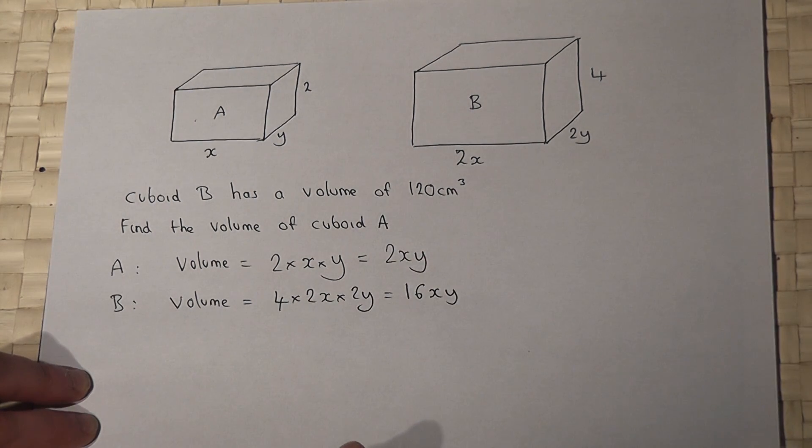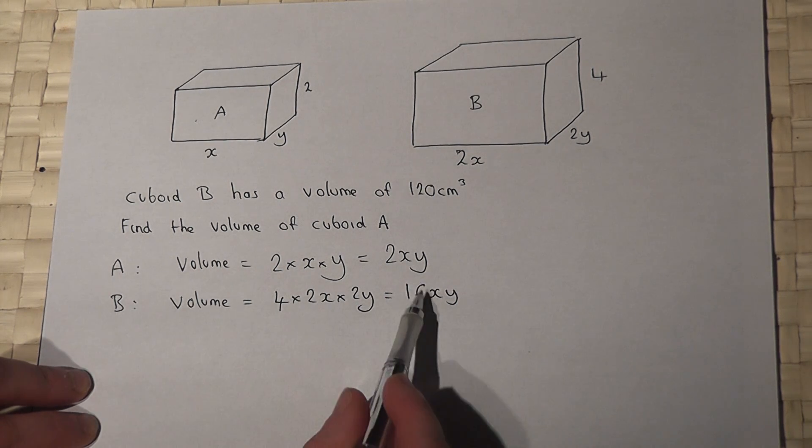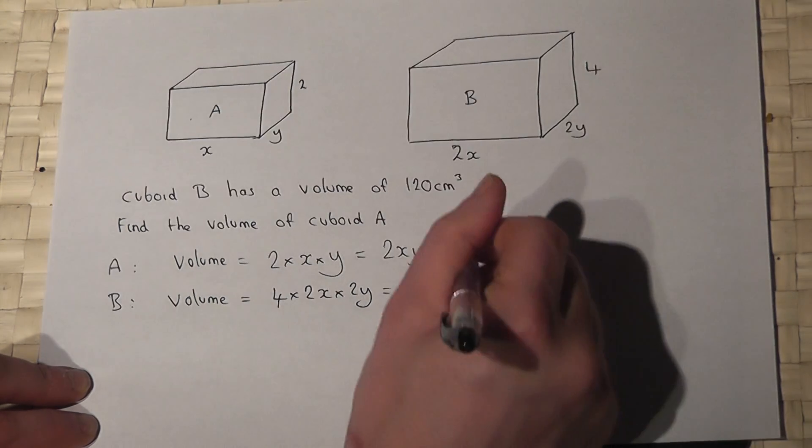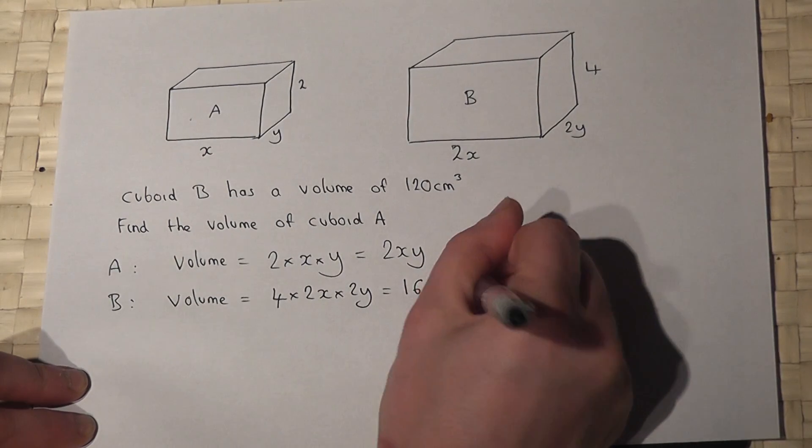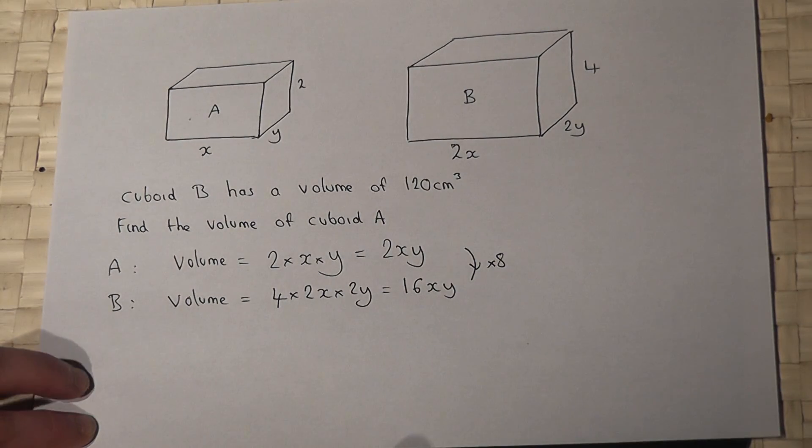So we can see that cuboid B is 8 times cuboid A.